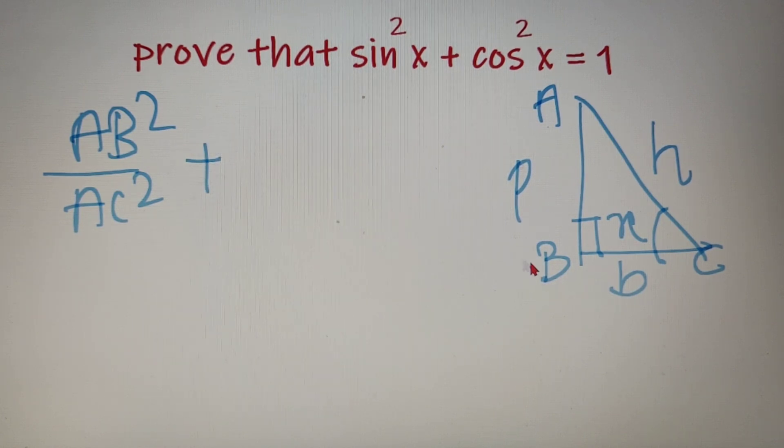Now I know that cos x is equal to base by hypotenuse, so instead of cos square x I can write it down as BC square plus AC square.